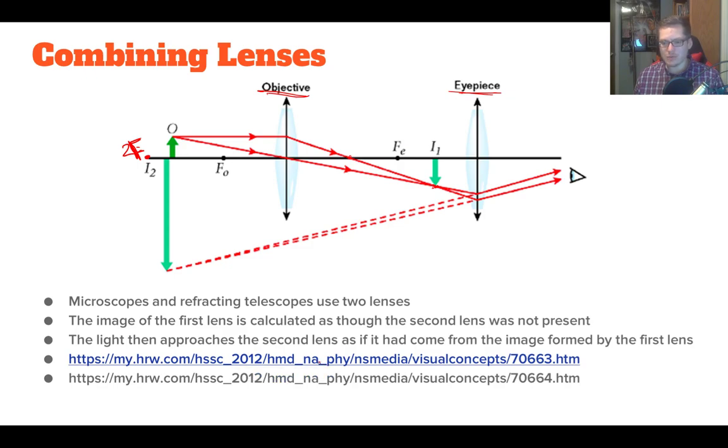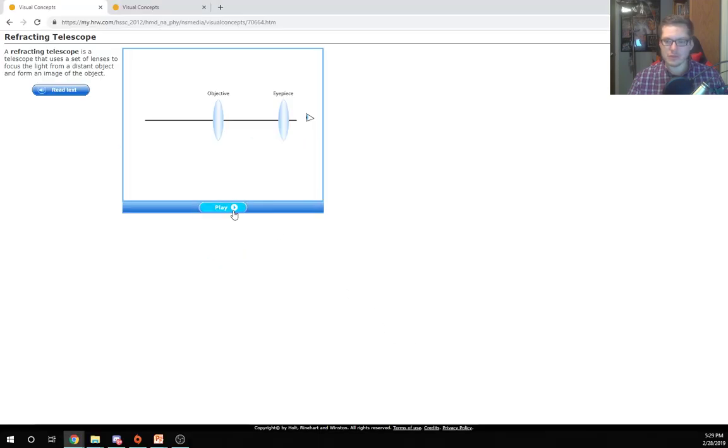We're using these two things in conjunction with one another in order to form the image that we want to see. This is image 1 formed by object 1. We're going to watch both of these real quick. These are from the textbook, from our textbook.